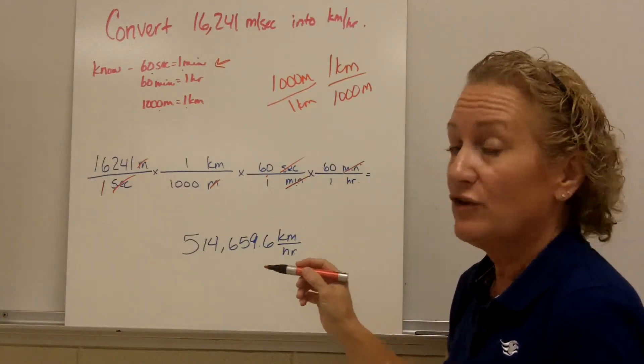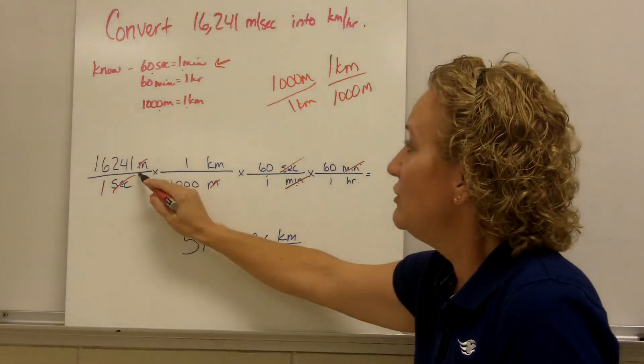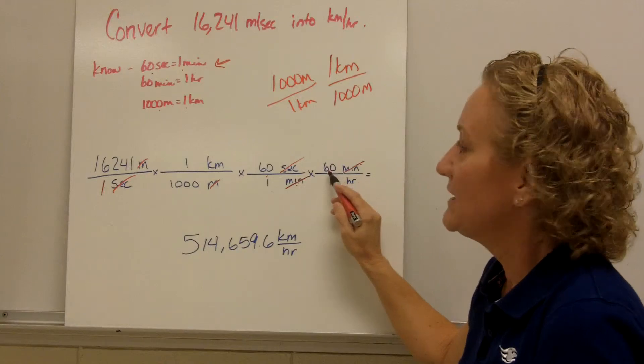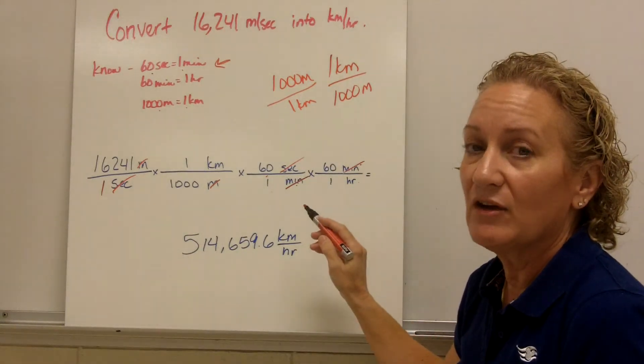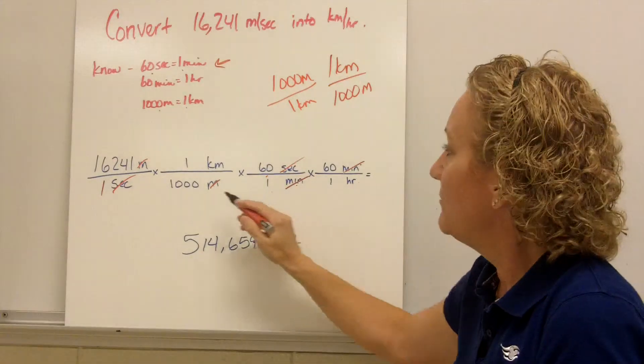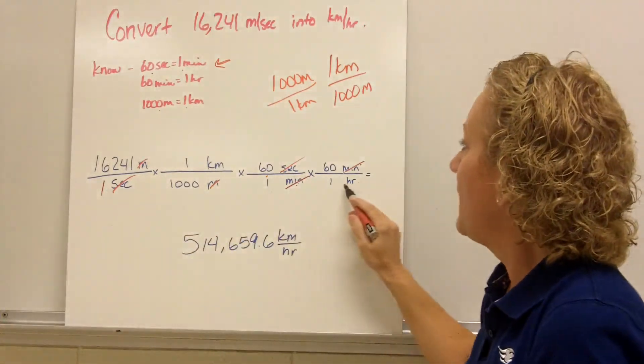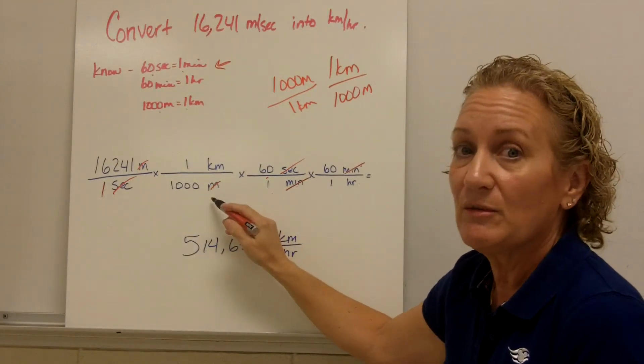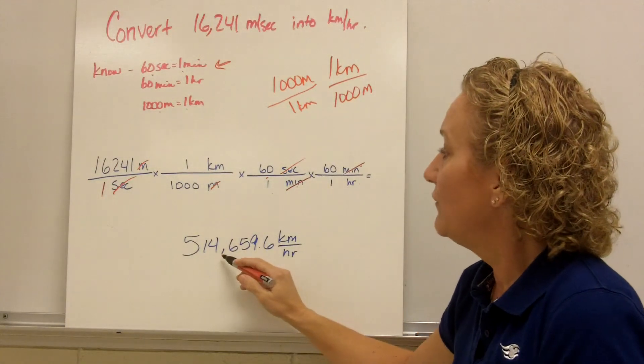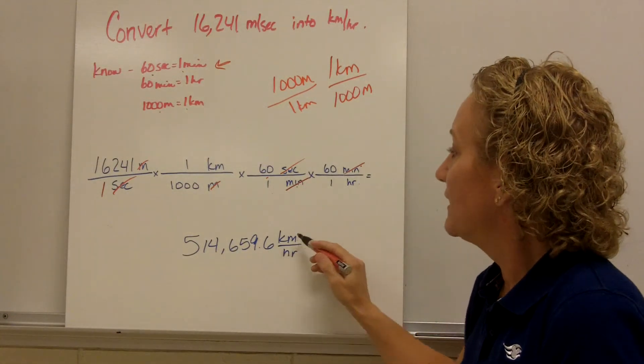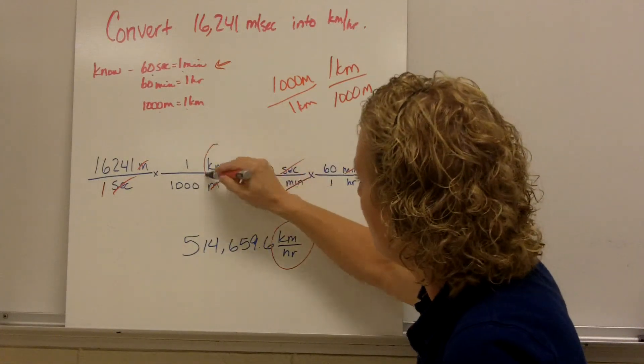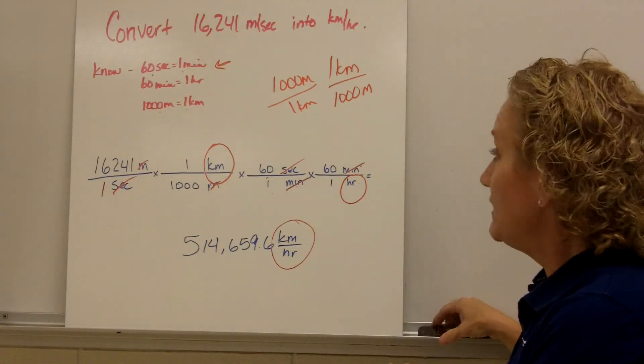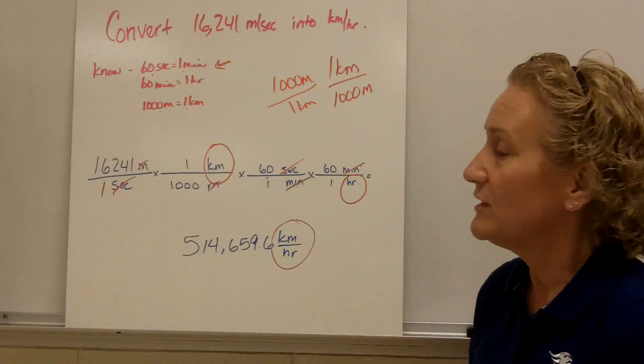So now when I do this on my calculator, here's what I would press on my calculator. 16,241. I'm not going to say times 1 because I know it's the same thing. Times 60, times 60. And then I'm going to hit the equal key on my calculator. I'm going to say divided by 1,000. Because anything in the bottom is divided. I can divide by 1, divide by 1, divide by 1. I'm going to get the same thing. But the dividing by 1,000 is really important. Then I'm going to hit equal. And I'm going to get 514,659.6 kilometers per hour. Am I left with kilometers per hour? Kilometers in the numerator. Hours in the denominator. That's kilometers per hour. So I did end up exactly where I wanted to be. So I'm done with this problem.